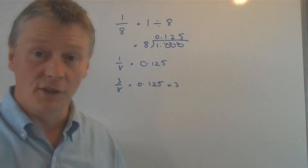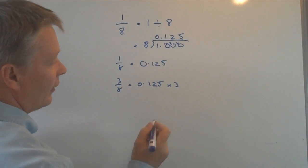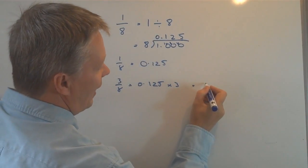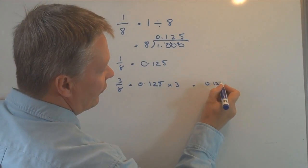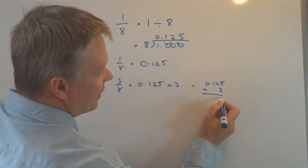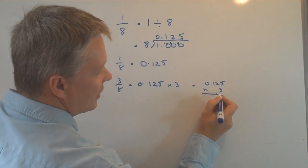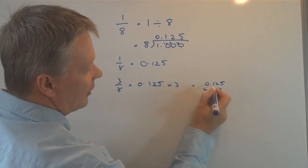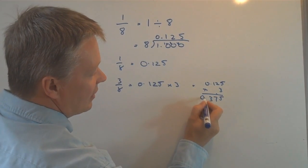So, if I wanted to, I could do a short multiplication, which I'll just do very quickly at the side, as 0.125 times three. So, three times five is fifteen, one to carry. Three-twos are six, plus one is seven,